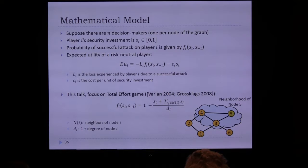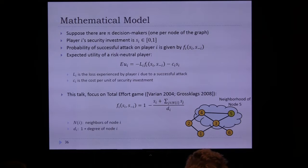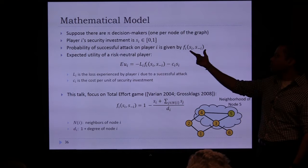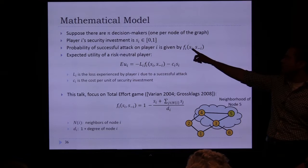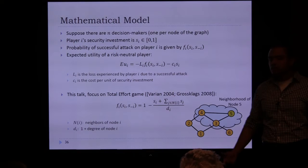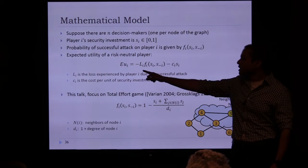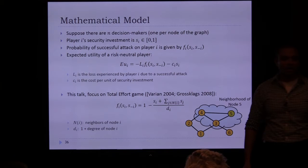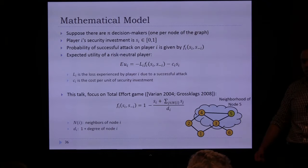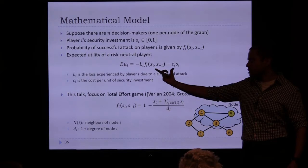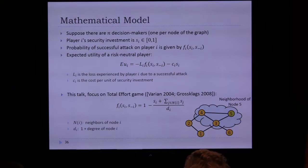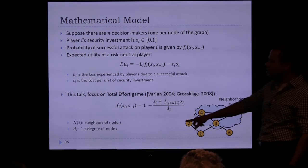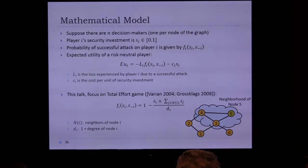The mathematical formulation: N decision makers, with security investment s_i between 0 and 1. The probability that player i is successfully attacked, F_i, depends on their own investment and those of other players. For a risk-neutral player, utility maximization involves minimizing expected attack loss L_i times F_i plus security cost C_i times s_i. We use the total effort model: attack probability equals 1 minus the average security investment in player i's neighborhood of size d_i.